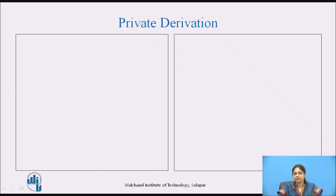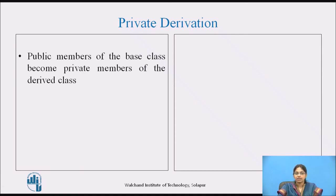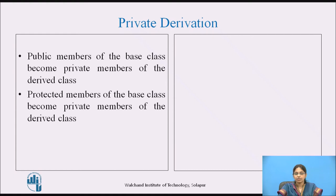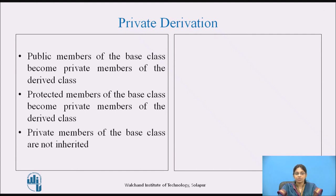Let us see the modes of derivation. There are three modes in total: private derivation, public derivation, and protected derivation. In private derivation, all the public members of the base class become private members of the derived class, protected members of the base class also become private members of the derived class, and private members of the base class are not inherited.